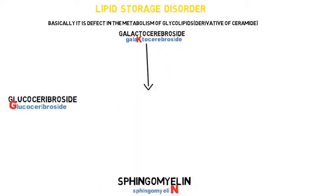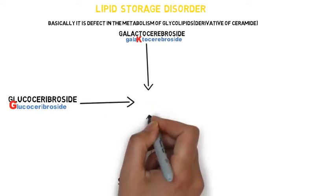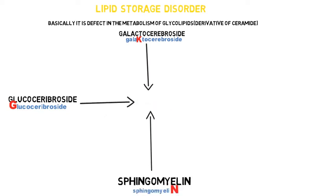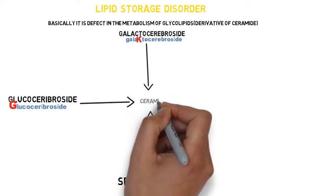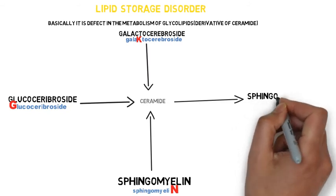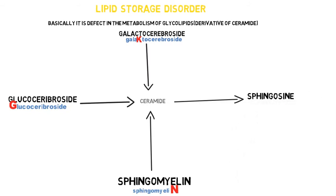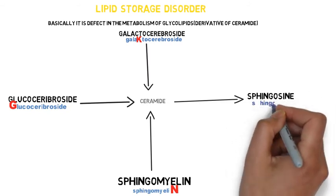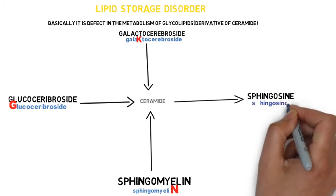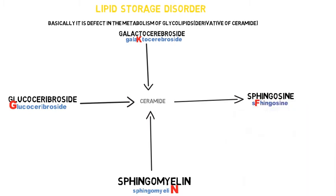All three glycolipids get converted to ceramide, and ceramide ultimately gets converted to sphingosine. We will write sphingosine with a capital F.